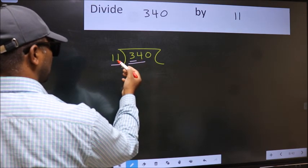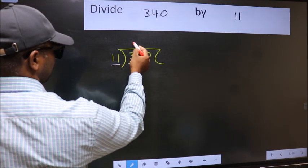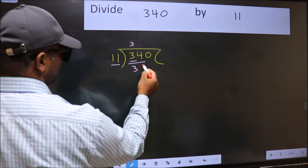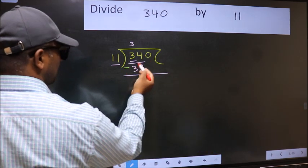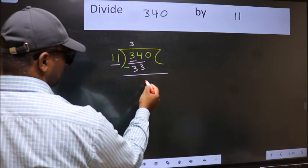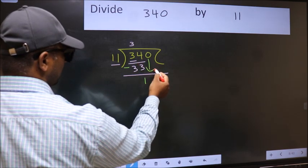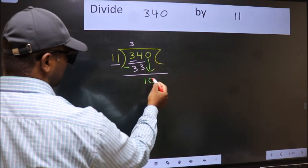A number close to 34 in 11 table is 11 times 3 is 33. Now you should subtract. 34 minus 33 is 1. After this, bring down the beside number, so 0 down.